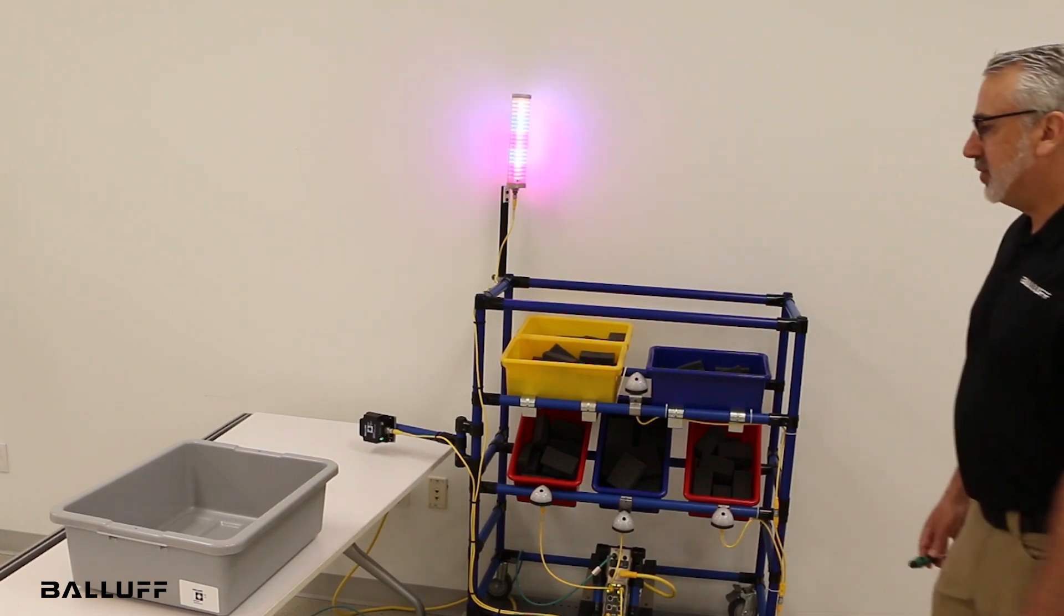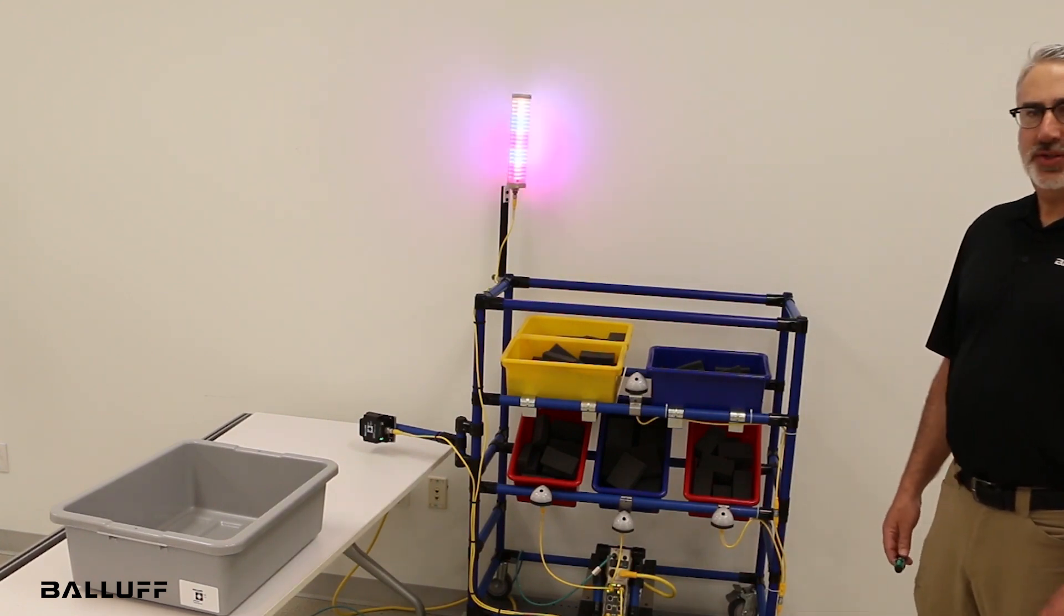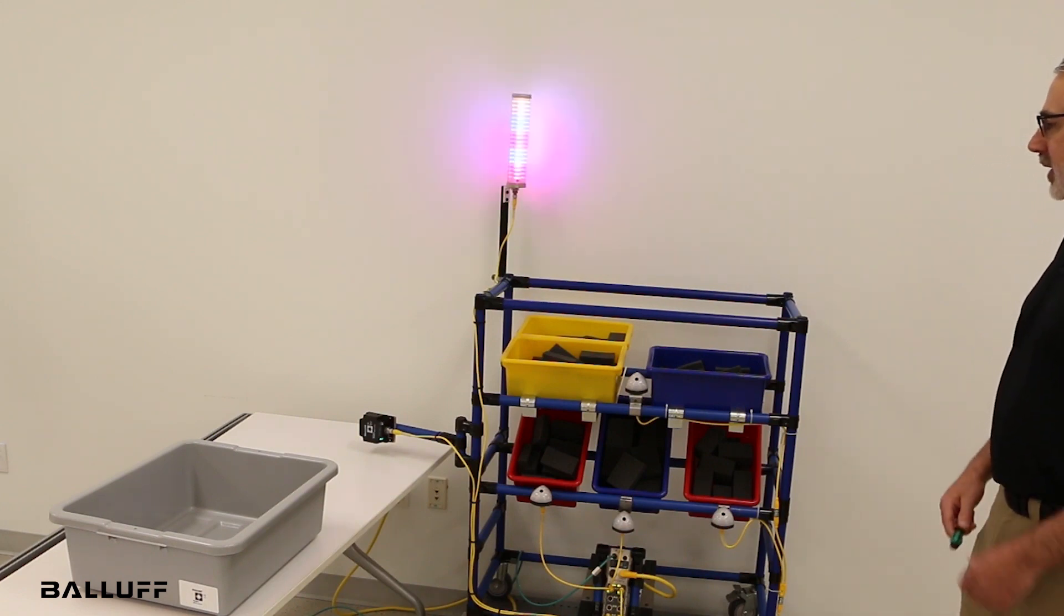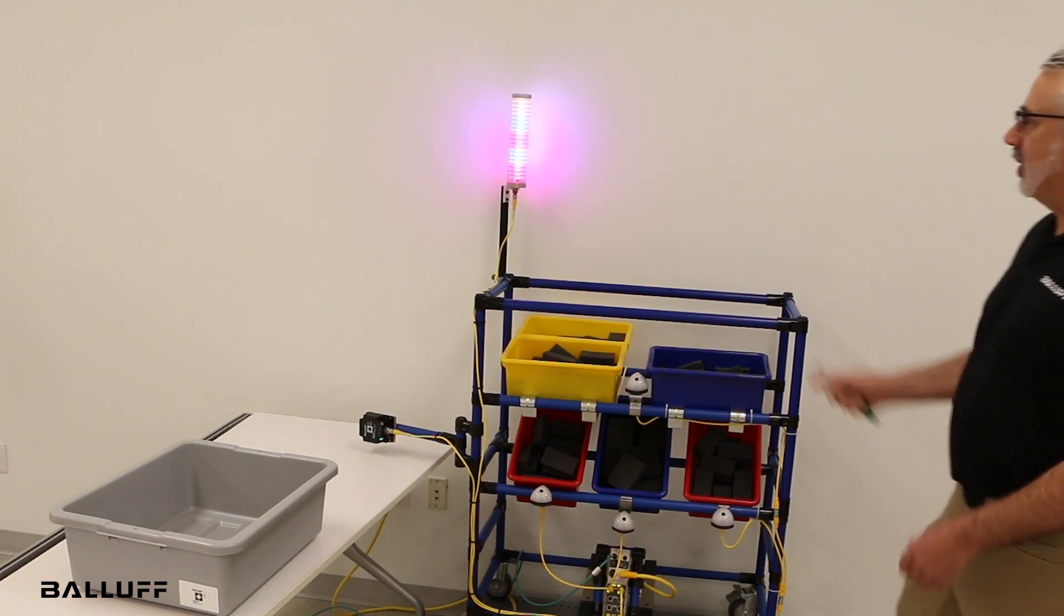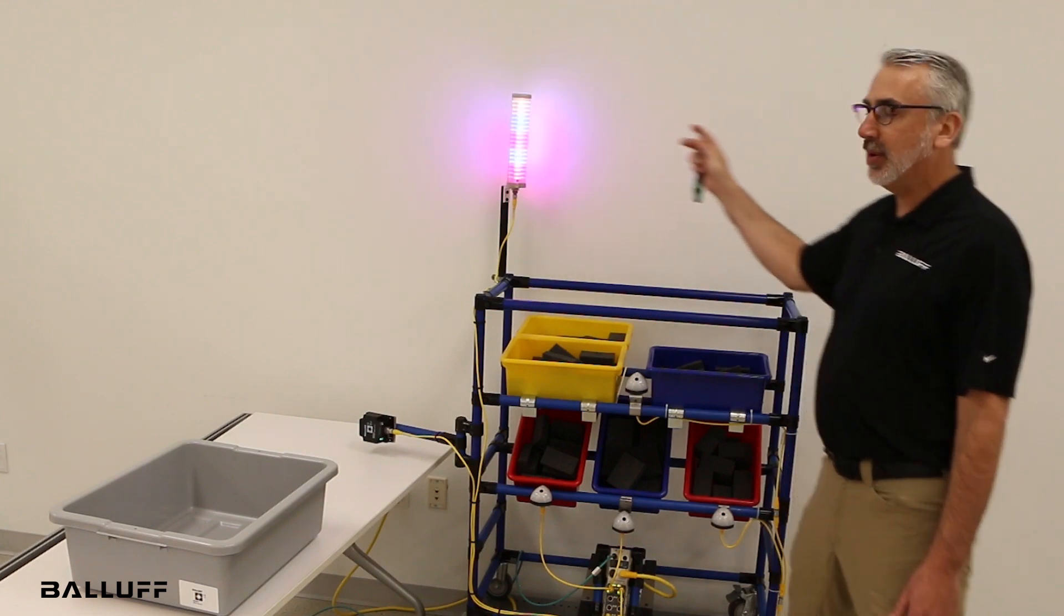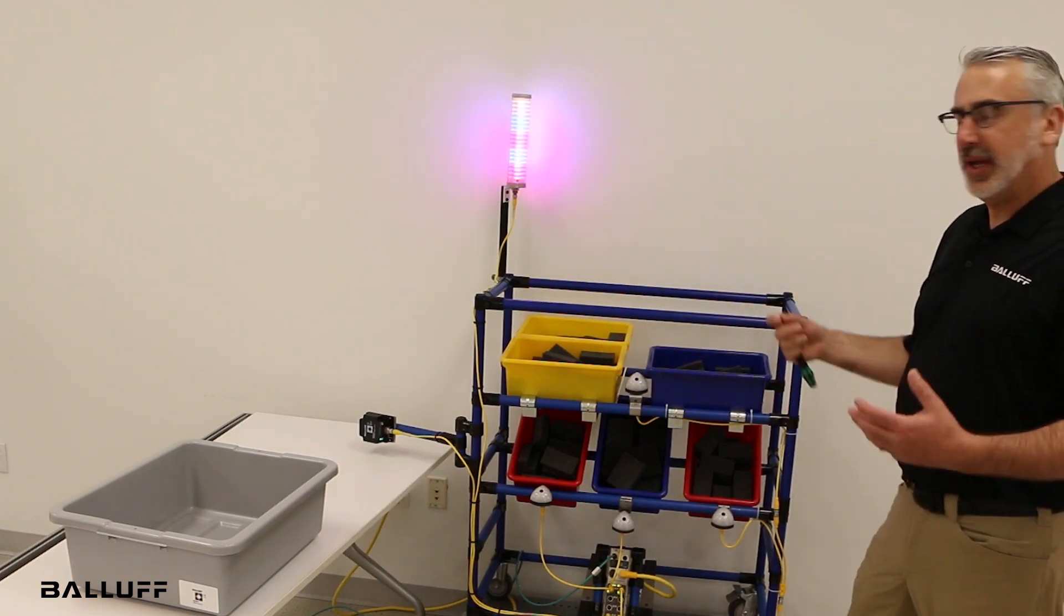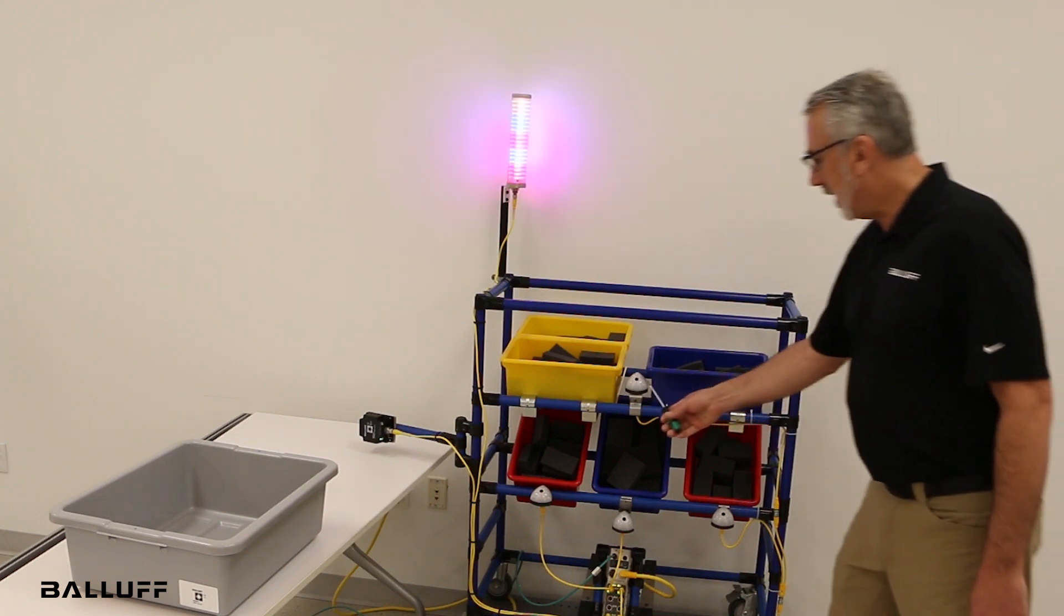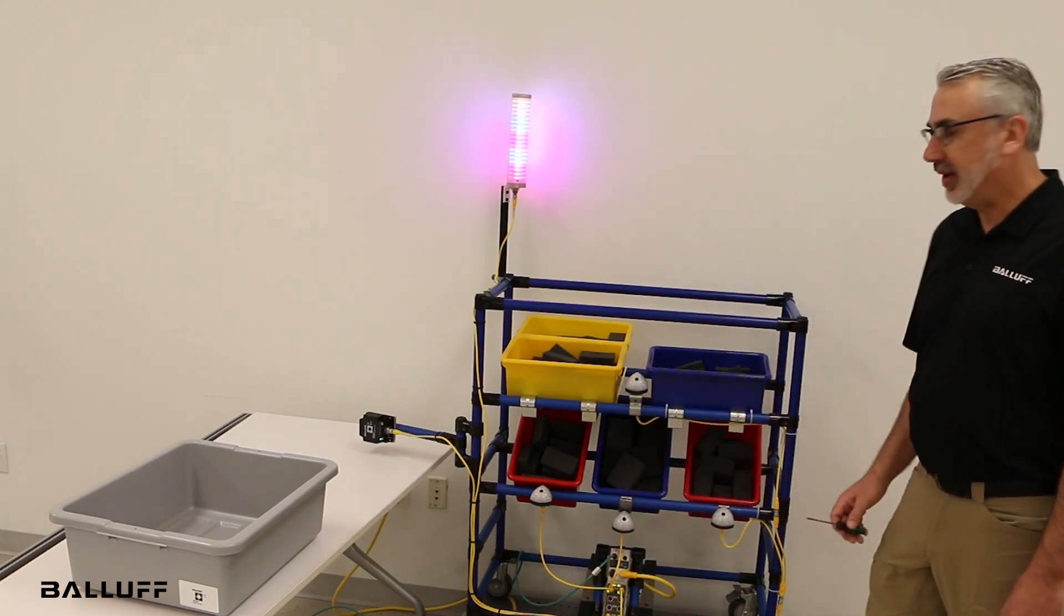First, we'll look at a traditional kitting station. So this would be like a supermarket in a manufacturing environment. Here in this case we have our traditional smart light tower that's telling operators and forklift drivers about the status of the supermarket. And here we have four different Pictolight indicators down here.